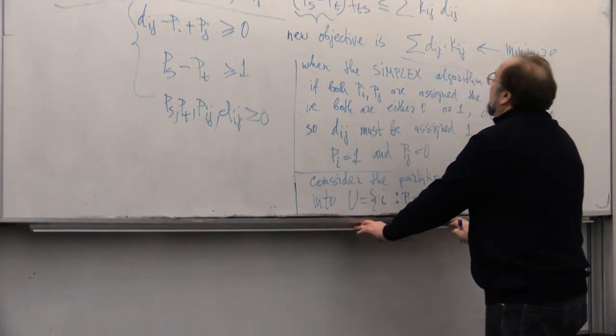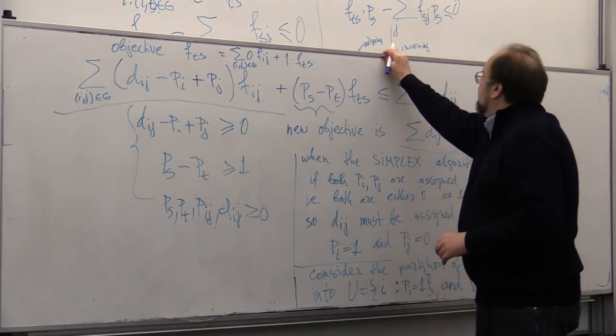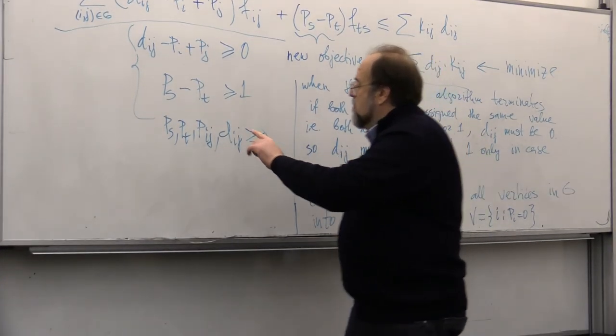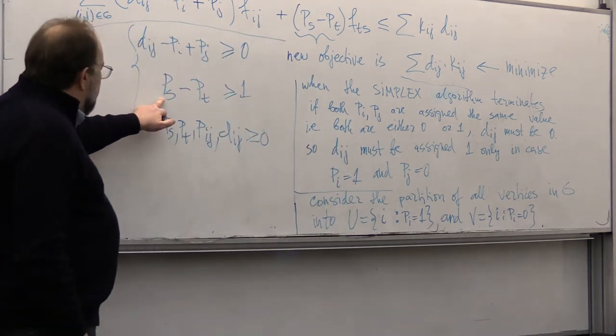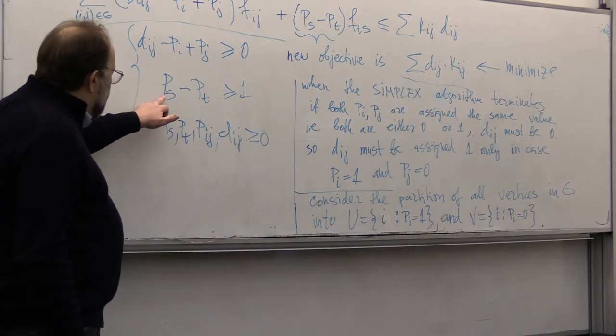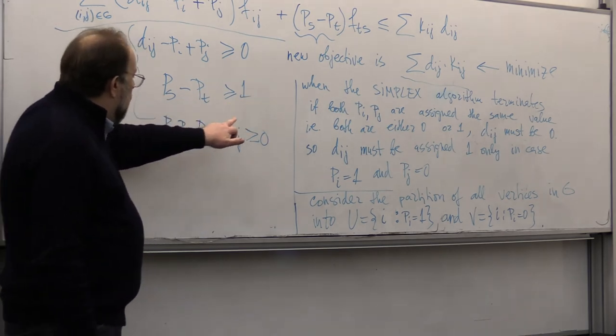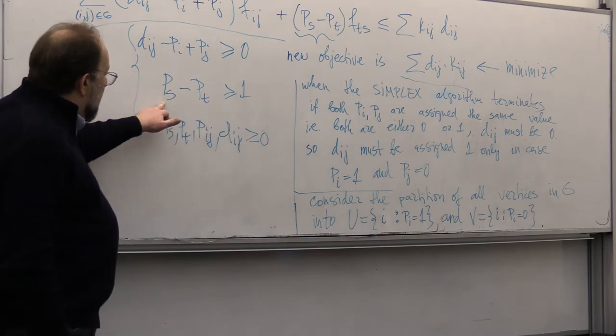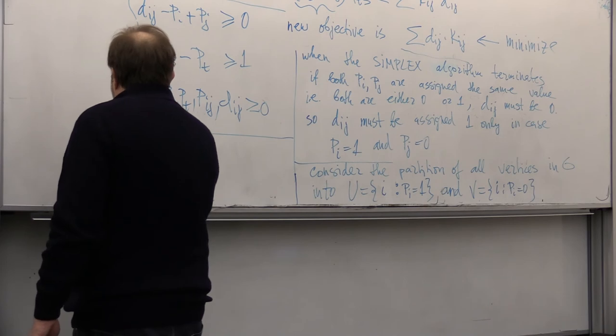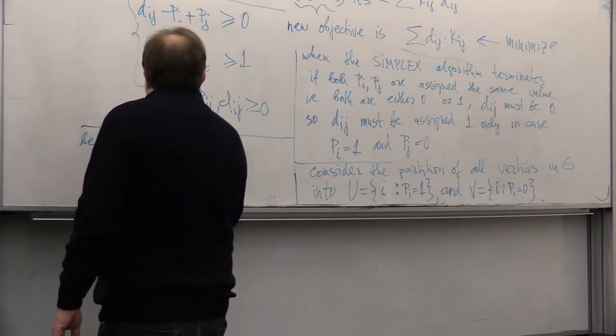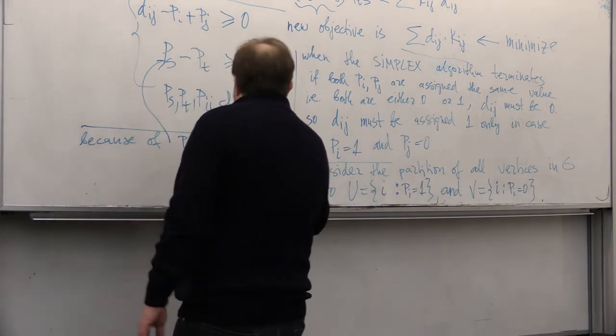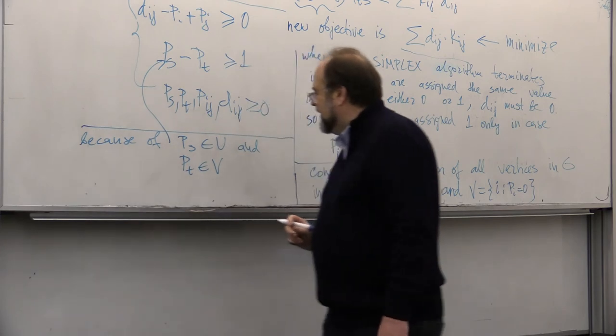And because of the very last inequality, this inequality, it's not possible that the source is zero and sink is one, so source must be equal to one because this is bigger or equal than one and each of them is either zero or one. So because of this, P,S belongs to U and P,T belongs to V.